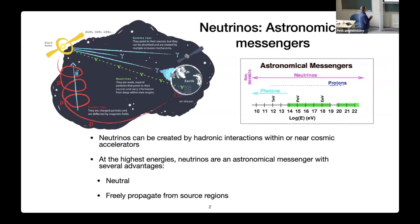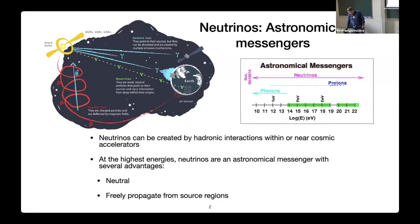Neutrinos are interesting messengers. They're neutral, they freely propagate, they're not impacted by magnetic fields, they can come from very distant sources. All of those things make them key as astrophysical messengers. To do this, we've built IceCube.